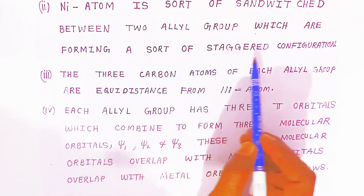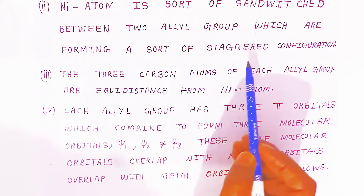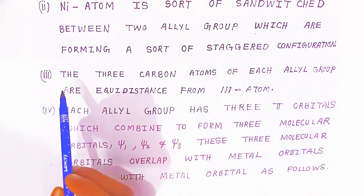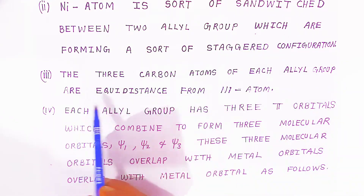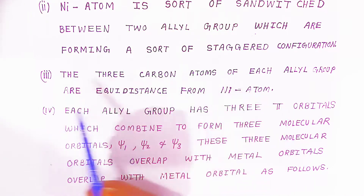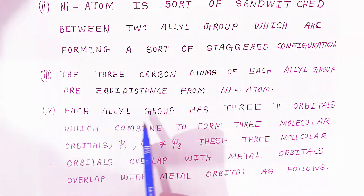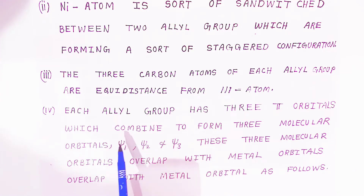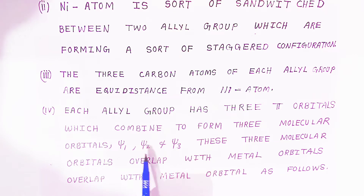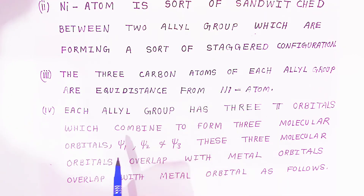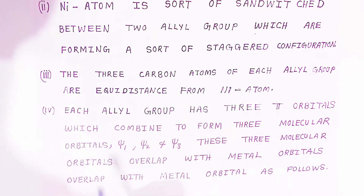The nickel atom is sandwiched between two allyl groups, which form a staggered configuration. The three carbon atoms of each allyl group are equidistant from the nickel atom. Each allyl group has three pi orbitals that combine to form three molecular orbitals: ψ₁, ψ₂, and ψ₃. All three carbons combine to form these allyl molecular orbitals.